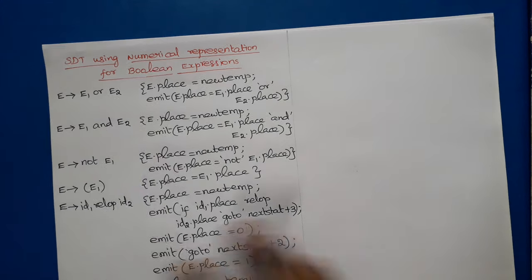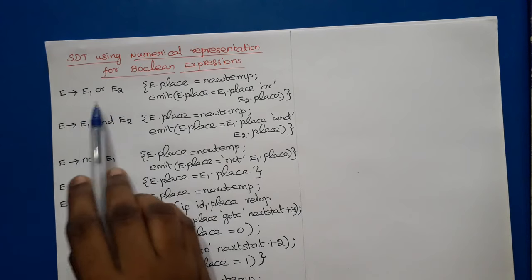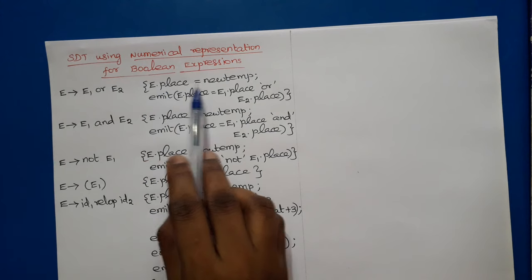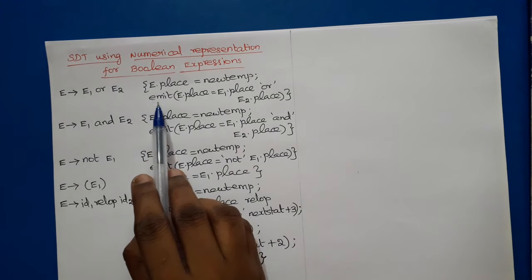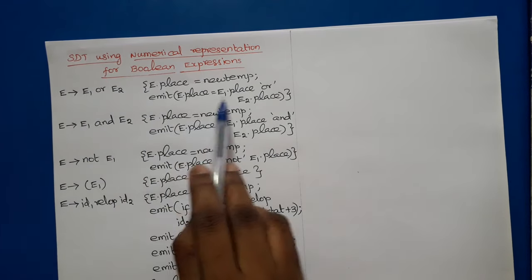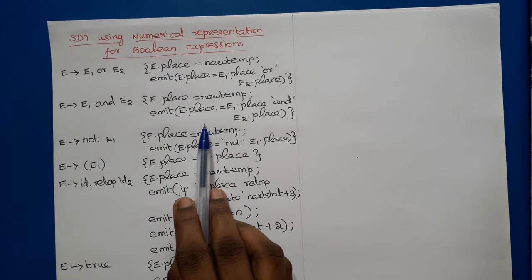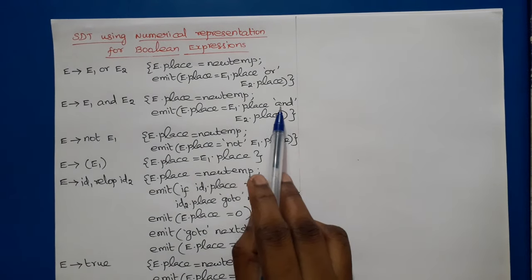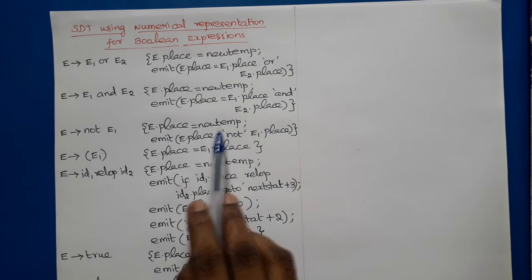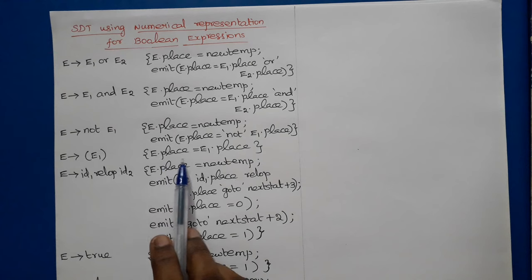Now we will see the productions one by one. For E → E1 OR E2, to store the result we need a temporary variable: E.place = new_temp, then emit produces E.place = E1.place OR E2.place. The same semantic action is performed for AND. For E → NOT E1: E.place = new_temp, then emit E.place = NOT E1.place. For E → (E1): E.place = E1.place.